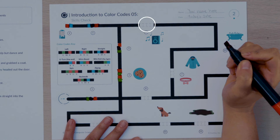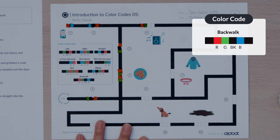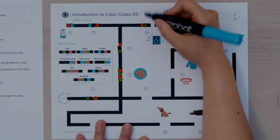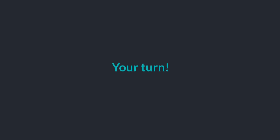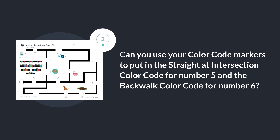The sixth missing color code has four colors so it must be a special move. Ozobot danced by doing a back walk. What special move in the color codes key do you think you will use? That's right, the back walk color code. I will put in the color sequence red green black blue for the sixth missing color code. Can you use your color code markers to put in the straight at intersection color codes for number five and the back walk color code for number six?